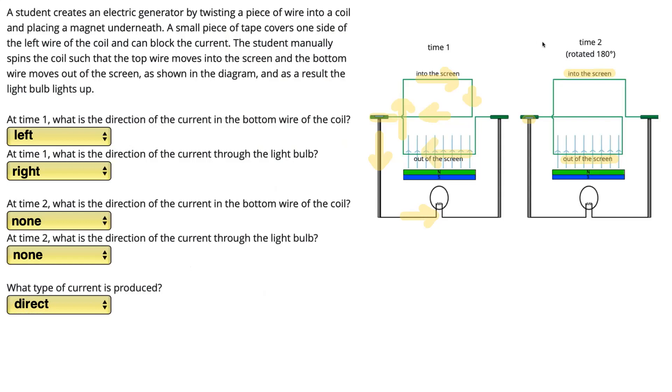If, however, we removed that piece of tape, we'd see that the current at time 2 flows opposite to the current at time 1. So we'd see for the second 180 degrees of the motion, the current was going in the opposite direction. So in that case, we would be creating alternating current that goes one way and then the other. But since it's blocked during time 2, we only ever get current going in one direction, and therefore we have direct current.